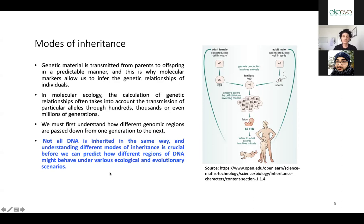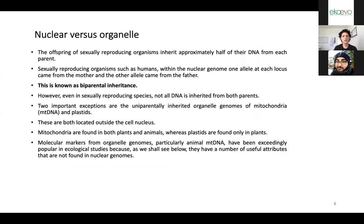Not all DNA is inherited in the same way — understanding the different modes of inheritance is crucial before you can predict how a different region of DNA might behave under various ecological and evolutionary scenarios. For the nuclear part, half of our genome comes from our father and half from our mother — it's a kind of equal, biparental inheritance. But when you consider cytoplasmic genetic material like mitochondria and chloroplasts, it's not equal.